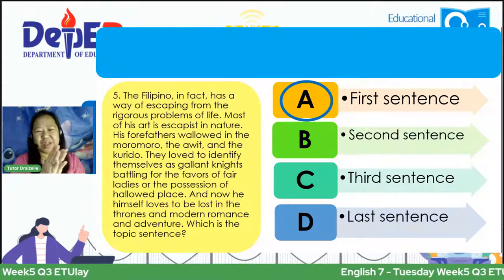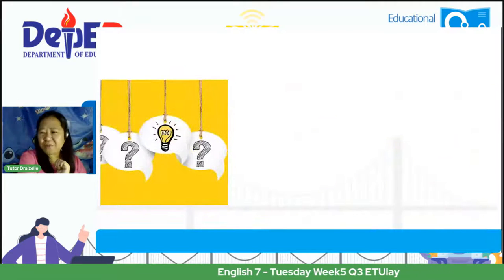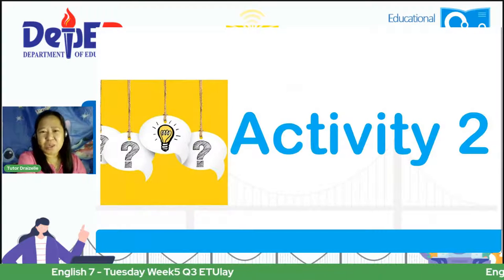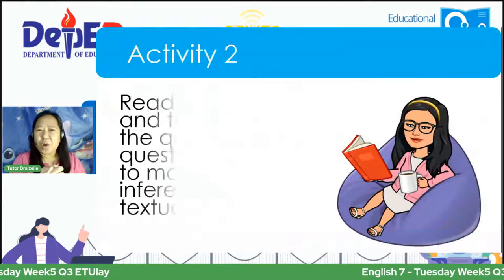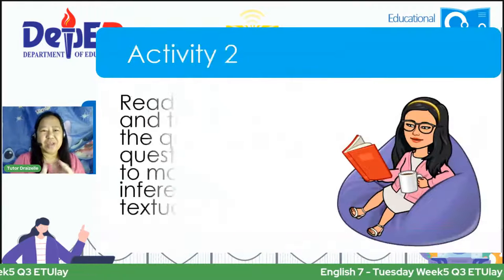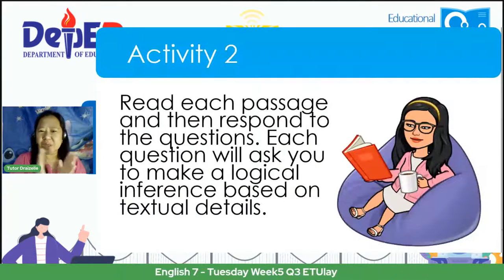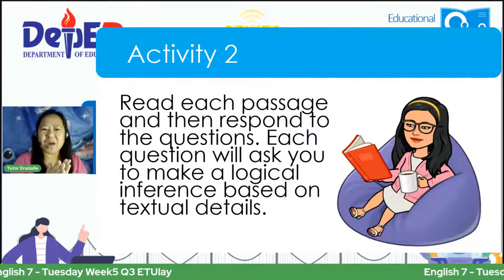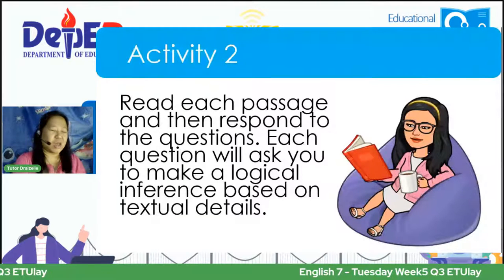Let us have Activity 2, the last activity. Read the passage and respond to the questions — we have one paragraph with logical inference questions. The paragraph: 'Robots are being used in sumo wrestling contests. Sumo wrestling is a sport that started in Japan. It takes place in a ring. Two players try to score points by holding each other down or pushing each other out of the ring. Robot sumo uses robots instead of humans. The robot that scores the most points wins.'